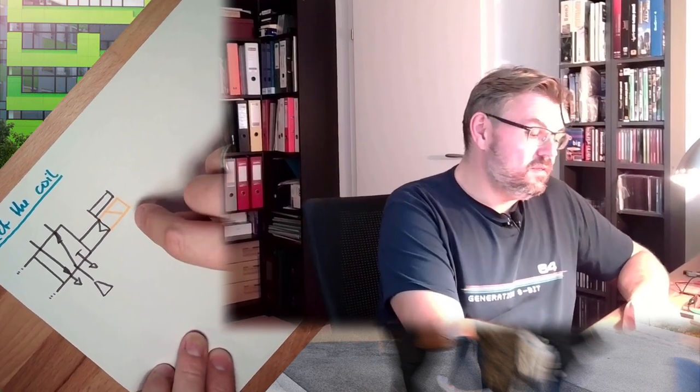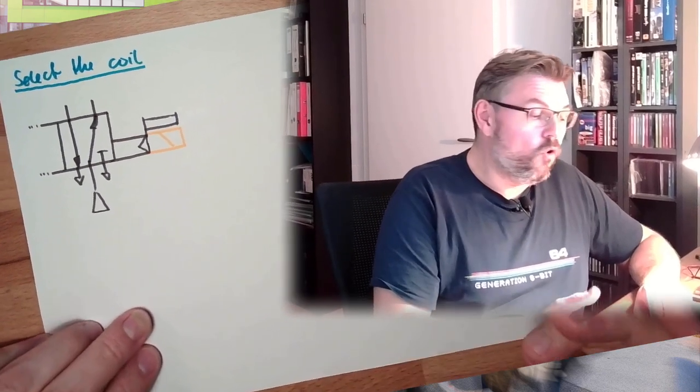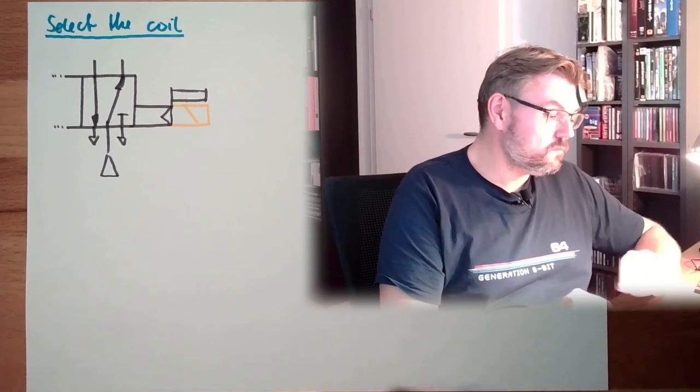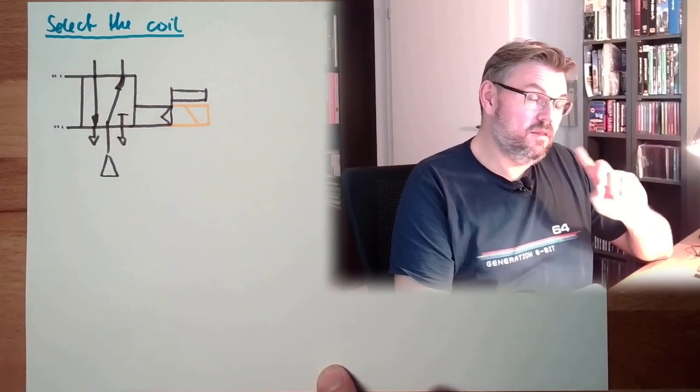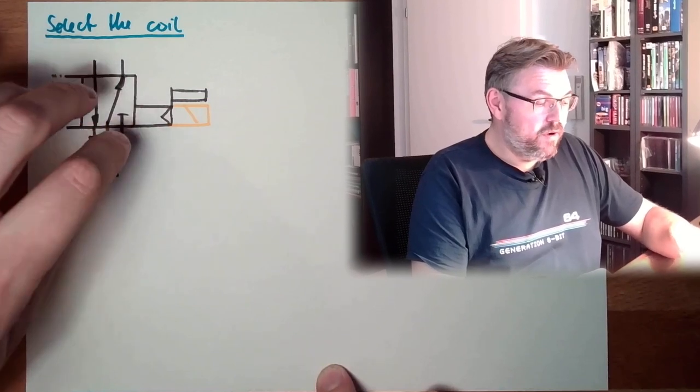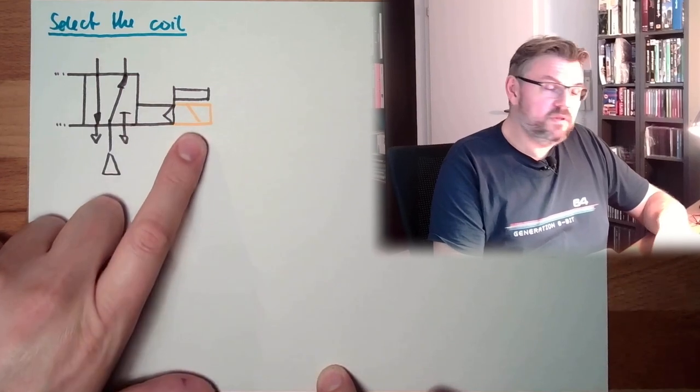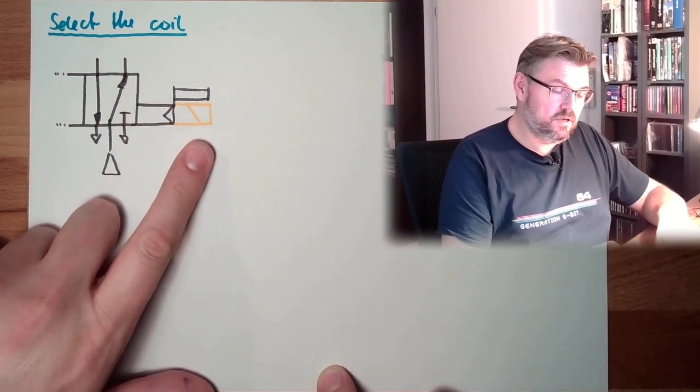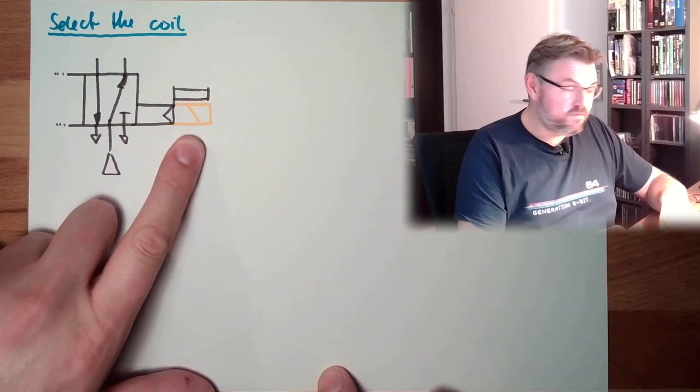What we're talking about actually is this part, which is highlighted here in orange color. And you can select, usually, the manufacturers have a variation of valves and a variation of compatible coils. So you can select the electrical properties of the coil.